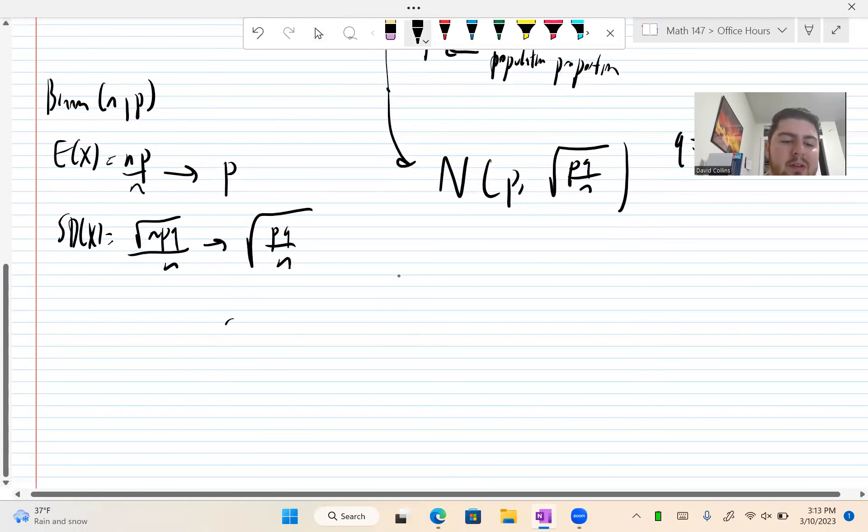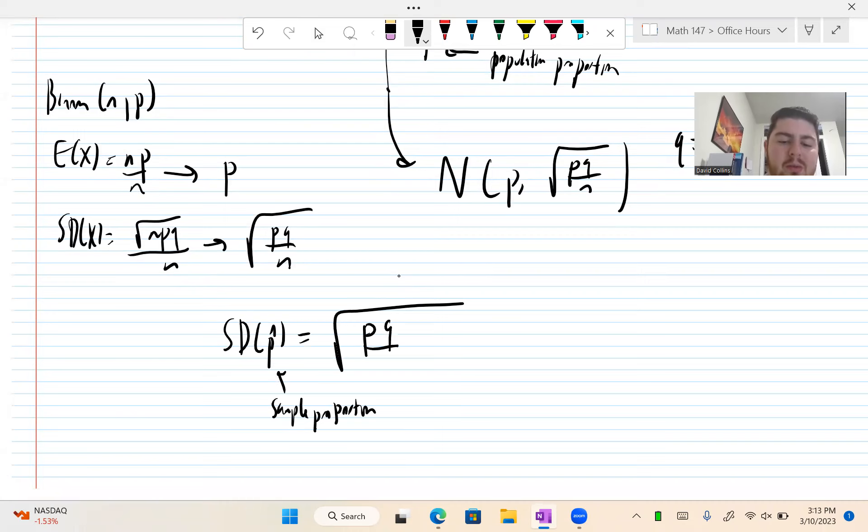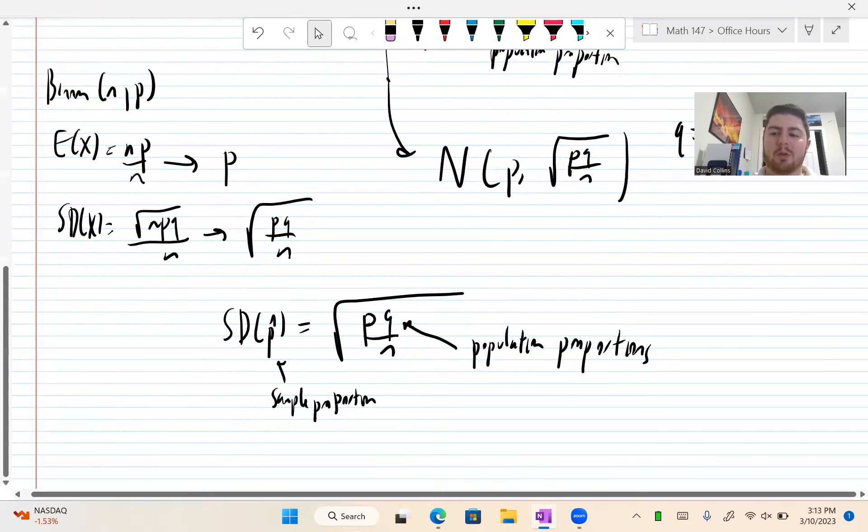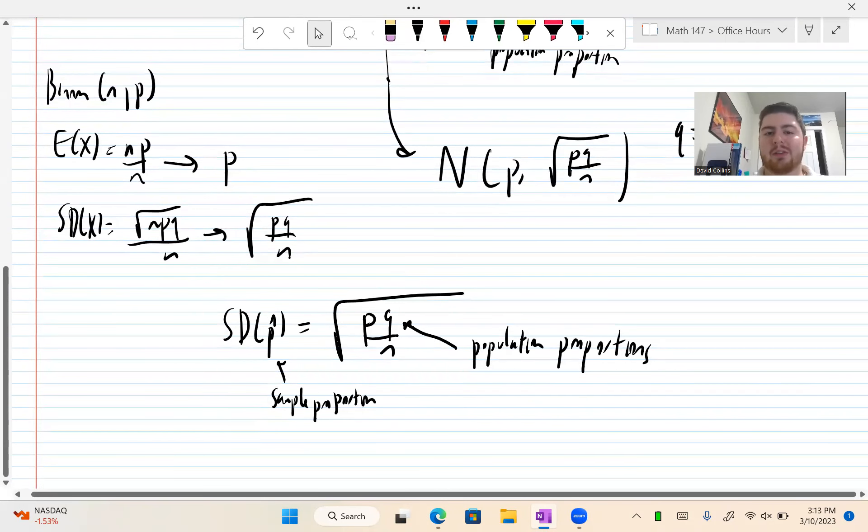So something I want to make very clear. We write the standard deviation of P hat, this is our sample proportion, is the square root of PQ over N. These are our population proportions. So in reality, we can't ever do this because we don't know our population proportions. If we did, we wouldn't need samples.